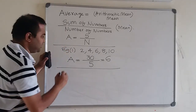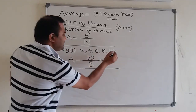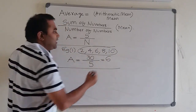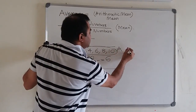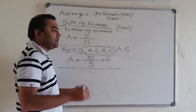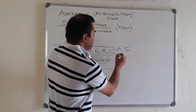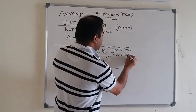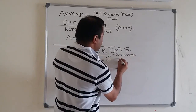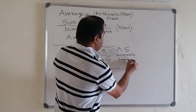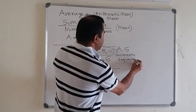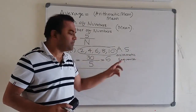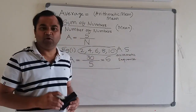Now let me tell you an important shortcut for finding the average of some numbers. You can see that these numbers 2, 4, 6, 8, 10 are in arithmetic sequence.